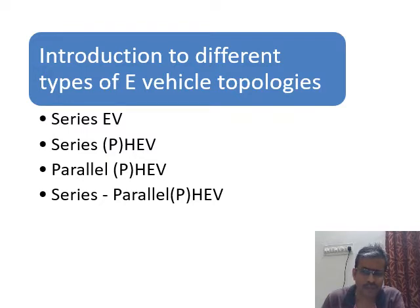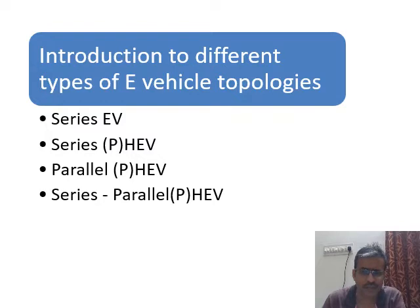To introduce, first I will introduce different e-vehicle topologies. There are four different types: Series EV, Series HEV, Parallel HEV, and Series Parallel HEV. And here you can see there are two different terminologies — EV and HEV. EV is nothing but electric vehicle. HEV is nothing but hybrid electric vehicle.